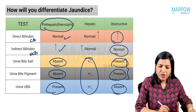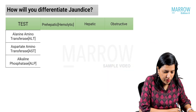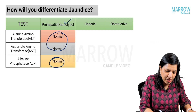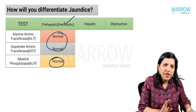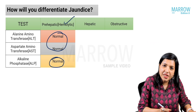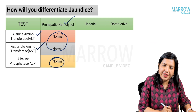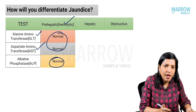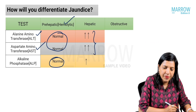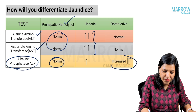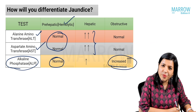Regarding enzyme markers: In hemolytic jaundice, ALT, AST, and ALP are all normal since there is no liver or biliary problem. In hepatic jaundice, ALT and AST are markedly elevated, while ALP is normal or only slightly increased. In obstructive jaundice, alkaline phosphatase (ALP) is the marker that is significantly elevated.